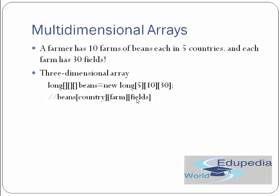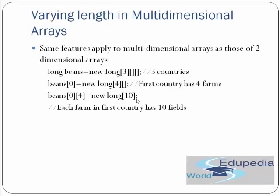Multidimensional arrays: for example, a farmer has 10 farms of beans each in 5 countries and each farm has 30 feeds — this is defined as new long[5][10][30], where 5 is countries, 10 is farms, and 30 is feeds. Varying lengths apply to multidimensional arrays as well — for example long[][][] beans = new long[3][][], where to the 0th index you can assign a 2D array with further sub-arrays.